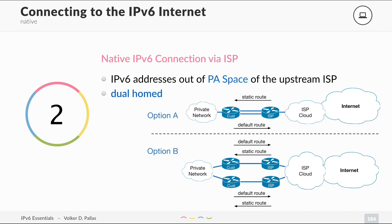The second option is similar — you get IPv6 addresses from the provider's PA space — but you are dual-homed, meaning you have two connections for more redundancy. In Option A, you have two connections between the same routers. Redundancy is higher in case a cable or SFP fails, but if the router itself fails, you are still down.